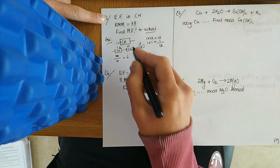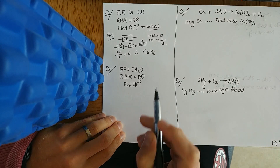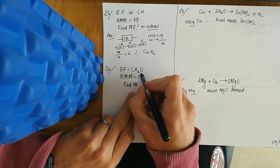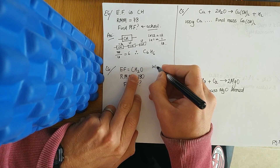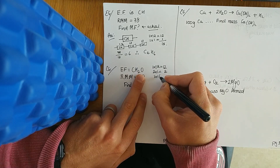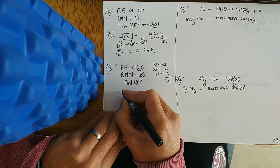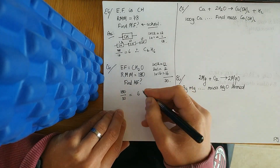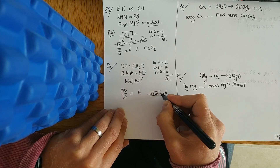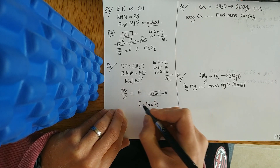Therefore the molecular formula is C6H6 — six carbons and six hydrogens. Next example: the empirical formula CH2O, the simplest whole number ratio. We want to see what each unit adds up to: one carbon, two hydrogens, one oxygen — total mass is 30. We want to see how many 30s go into 180: that's 6, so there are six CH2O units.